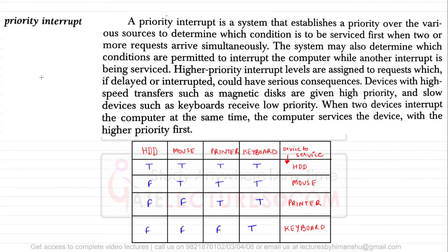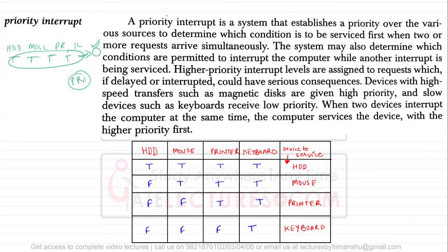For example, if you have a hard disk, a mouse, a printer, and a keyboard, and all four generate interrupts simultaneously, we must choose which device to service first based on priority. Additionally, if the printer's interrupt service routine is currently running and a new interrupt arrives from a higher or lower priority device, we need to decide whether to stop the current routine or continue with it.